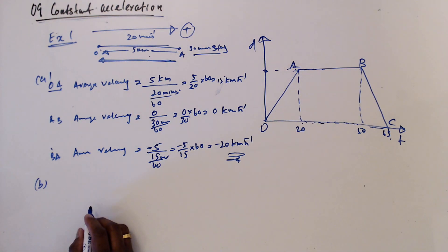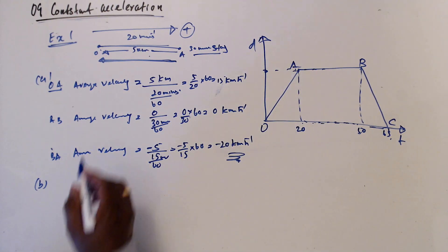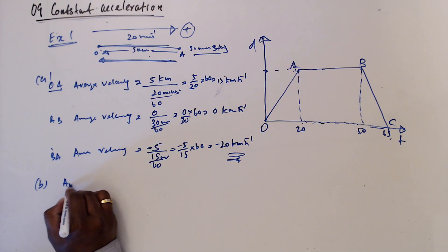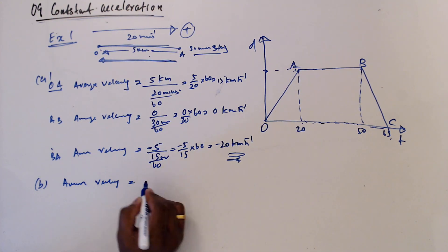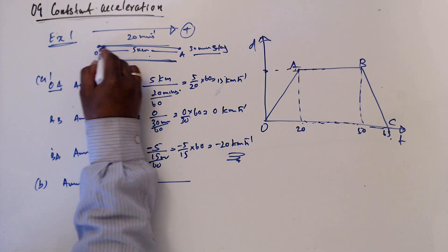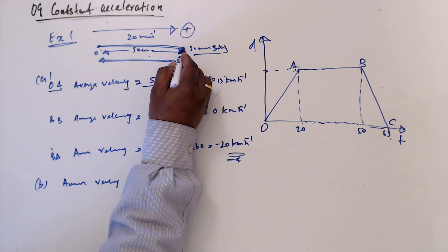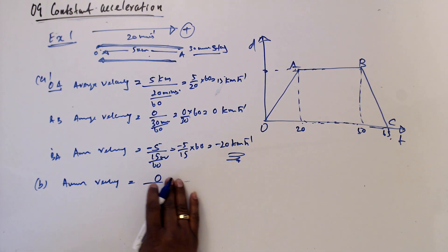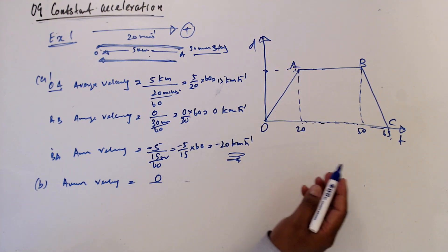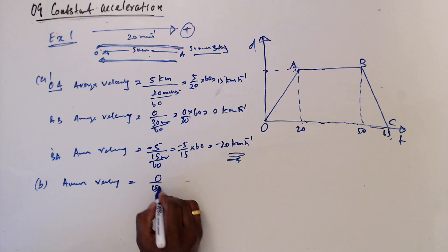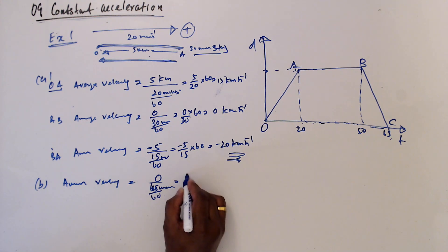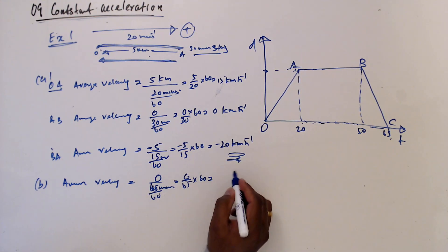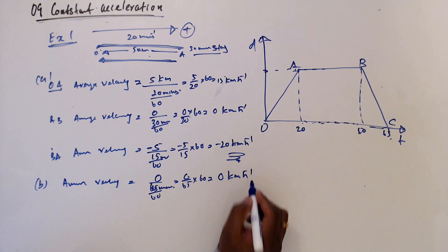Part b: find the average velocity for the whole journey. The displacement for the whole journey — going out and coming back — is zero. Time taken is 65 minutes, which is 65 over 60 hours. So average velocity is zero divided by 65 over 60, giving zero km/h.